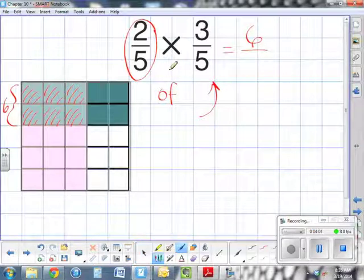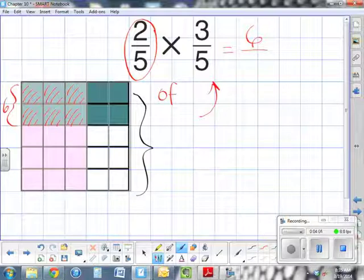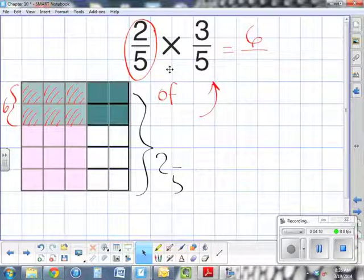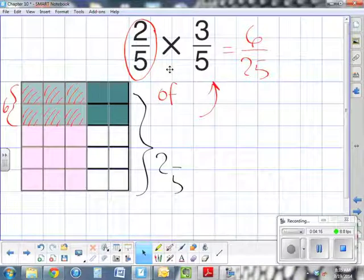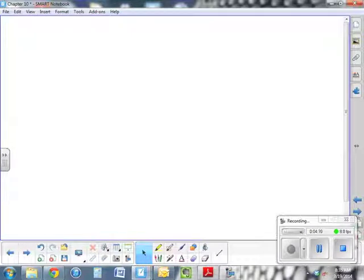Now what about my denominator? Look at the whole, look at the total. How many parts are there in total? If you count them, there's a grand total of 25. So that means my denominator is 25. My fraction in this case is in simplest form, so that is my answer.